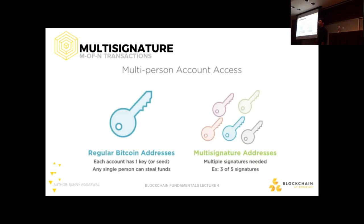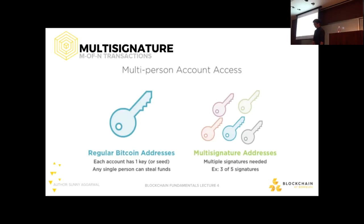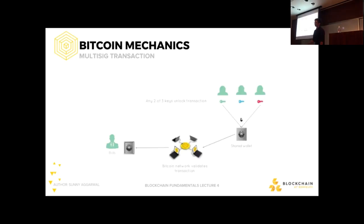One feature a Bitcoin wallet might provide is multi-sig — multi-signature — which allows for M-of-N transactions. Imagine a company with N people on the executive board: you require at least M of those N to agree before moving forward. In this diagram there are three people — Alice, Charlie, and Dave — enabling two-of-three multi-signature. The first two agree while the third doesn't; that's fine, you reach the threshold, and Bob on the other end can receive the transaction.